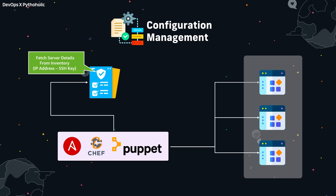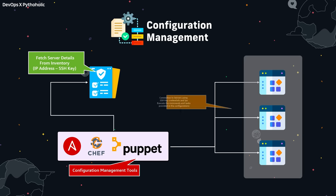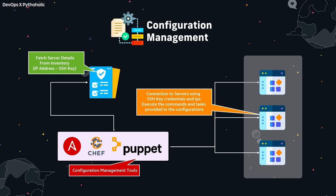Here, you fetch the list of server credentials like SSH keys and IP addresses that you want to work on. You create tasks on your configuration management tools like Ansible, Chef, or Puppet, and using that you execute commands and tasks on the servers you want — it could be a list of 50 or 100 servers. You might say the configuration management tool can also be used in place of IaC tools like Terraform, but there is a very interesting thing that makes tools like Terraform stand out.